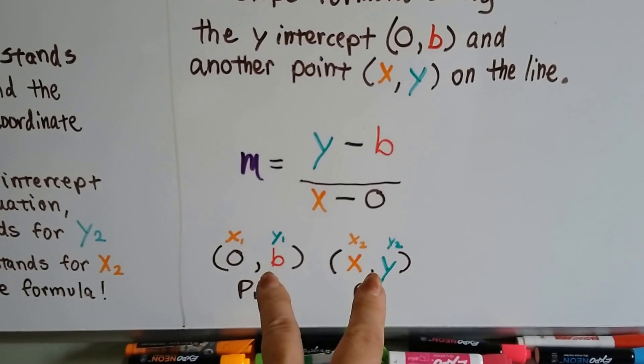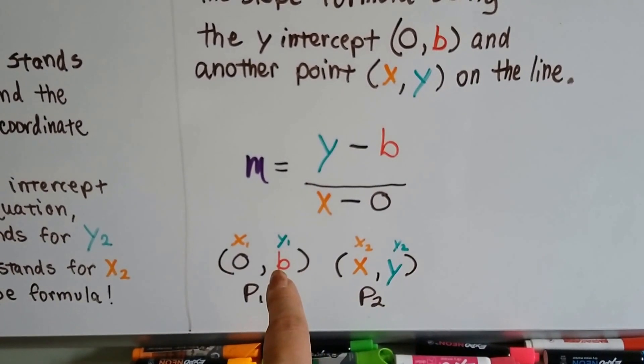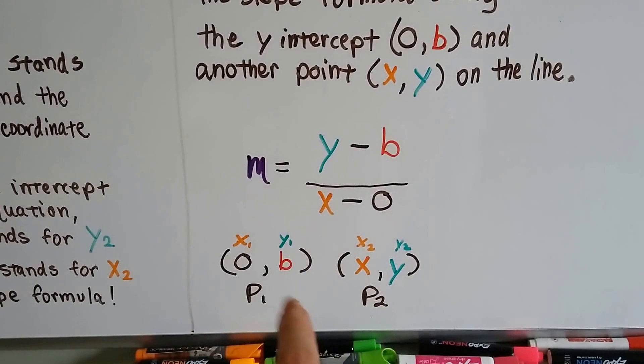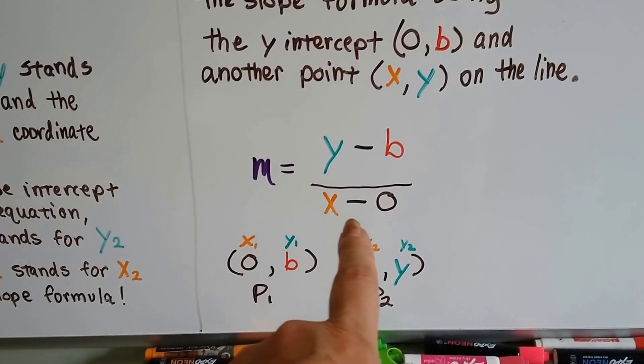So here's our two ordered pairs. And we've got y2 and y1. So we're going to do y minus b. That's the numerator. Then we're going to do x2 minus x1. So we've got x minus 0.